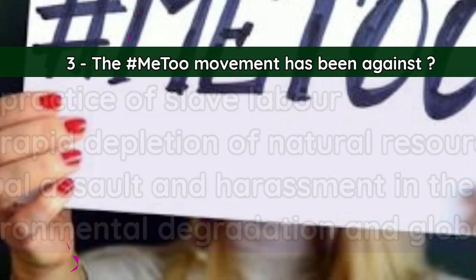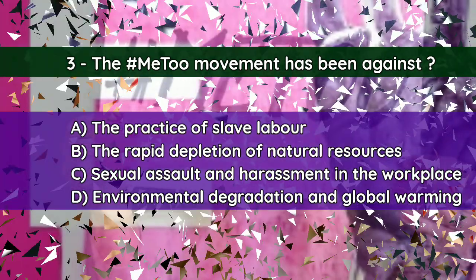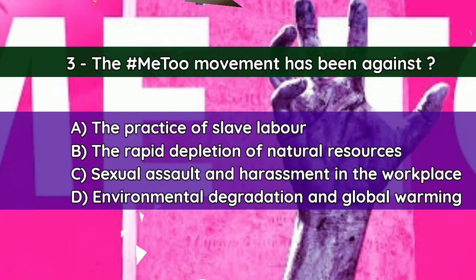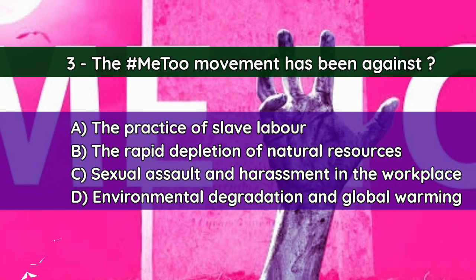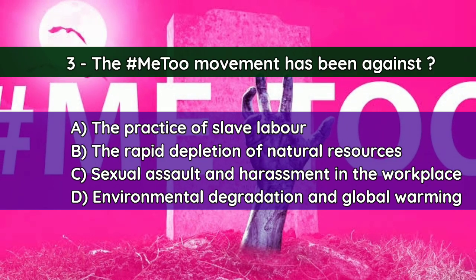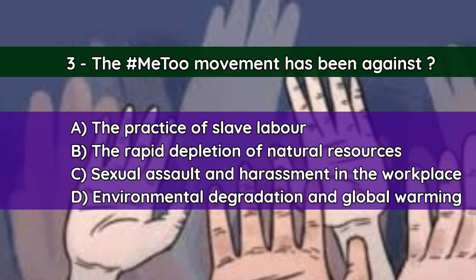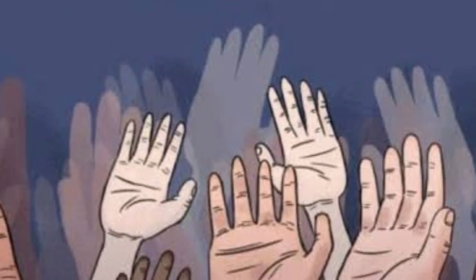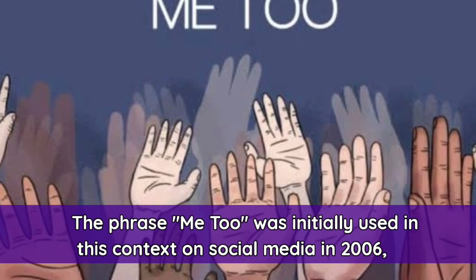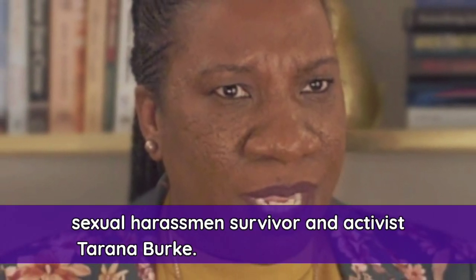Question number three: The hashtag MeToo movement has been against — A. The practice of slave labor, B. The rapid depletion of natural resources, C. Sexual assault and harassment in the workplace, D. Environmental degradation and global warming. And the correct answer is C — sexual assault and harassment in the workplace. The phrase MeToo was initially used in this context on social media in 2006 on MySpace by sexual harassment survivor and activist Tarana Burke.